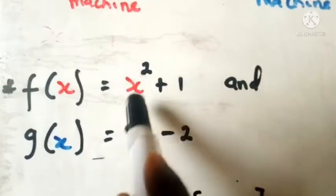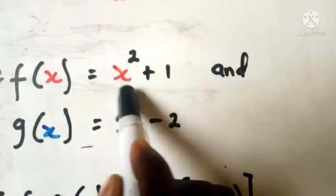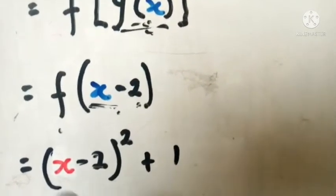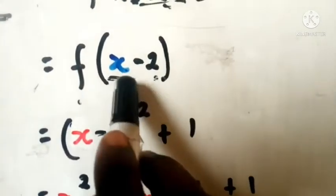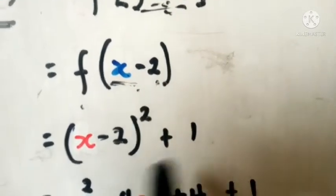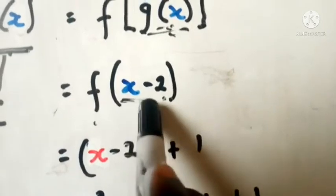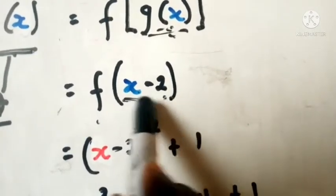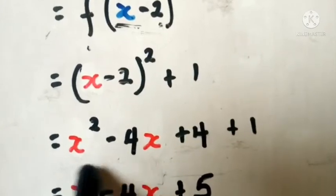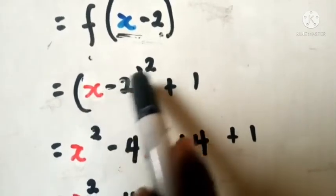The second machine says: whatever you pick from the first one, you should square it and then add one. What are we picking from the first machine? We are picking x minus 2. So we get (x minus 2) squared plus 1. I placed this in brackets because everything we are picking from the first machine is x minus 2 — that whole expression is squared and then plus 1. Now let's expand: squaring gives x squared minus 4x plus 4, and then plus 1.